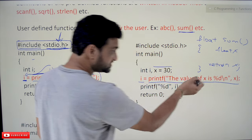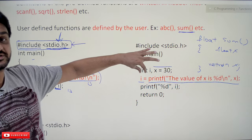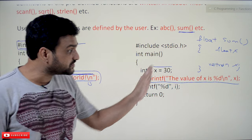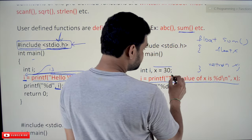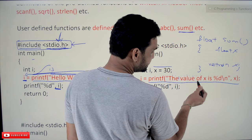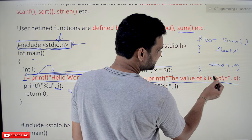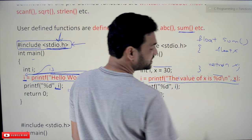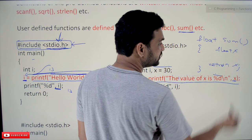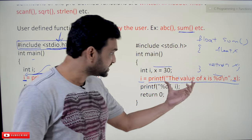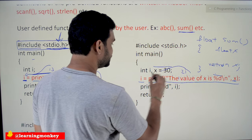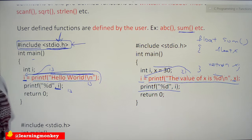For example, if the value of X is 30, and I is assigned with this printf function — that is legal because printf is returning an int value, specifically the number of characters printed. Counting here: 1, 2, 3 (space is also a character), 4, 5, 6, 7, 8, 9, 10, 11, 12, 13, 14, 15, 16, 17, 18, then printing X which has 2 characters: 19, 20, and the newline is 21. So this entire printf is going to return 21, and 21 will get assigned to I.